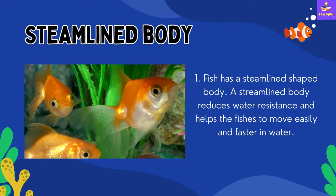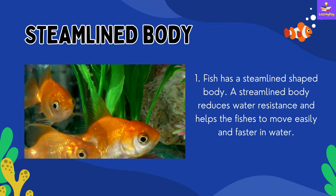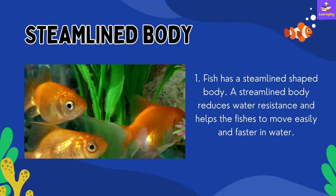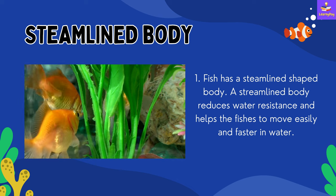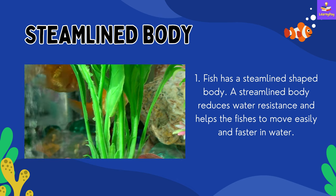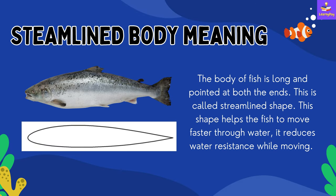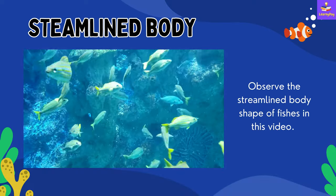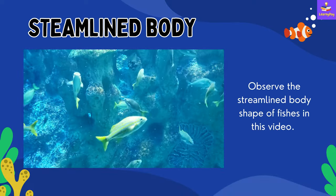Number 1: Streamlined body. Fish has a streamlined shaped body. A streamlined body reduces water resistance and helps the fishes to move easily and faster in water. The body of fish is long and pointed at both ends, as you can see in this figure or diagram. This is called streamlined shape. This shape helps the fish to move faster through water and reduces water resistance while moving. Watch this video and observe the streamlined body shape of fishes.